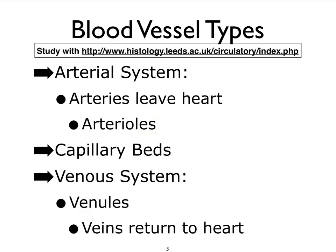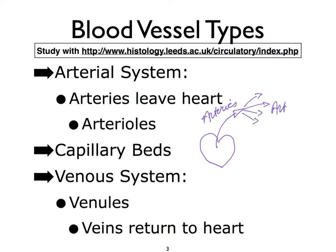We can organize all of the blood vessels in our body into three different systems: the arterial system, then we have our capillaries, and finally our venous system. Arising from the heart, that's where we have our arteries. Our arteries will then eventually, as they branch, eventually become arterioles. These arterioles, in turn, will further branch into capillary beds.